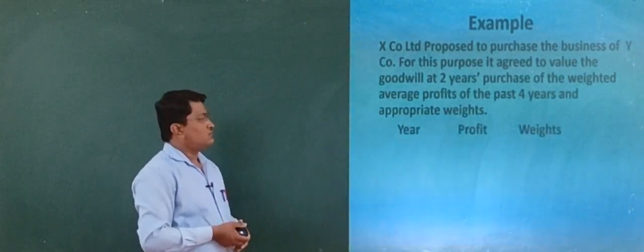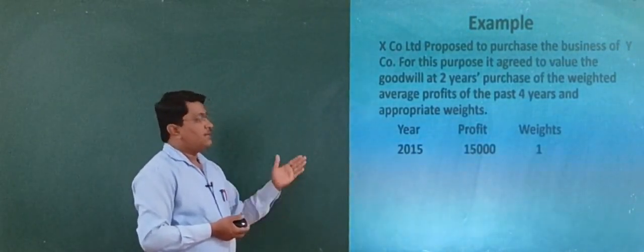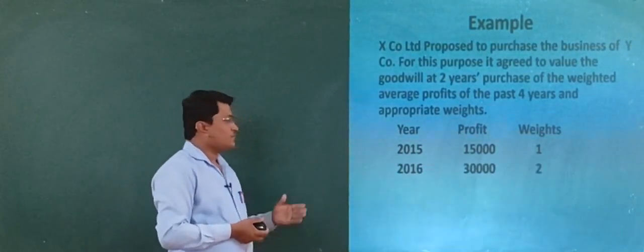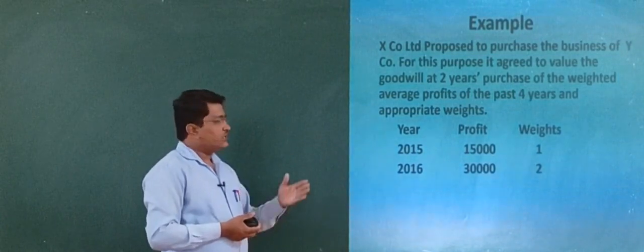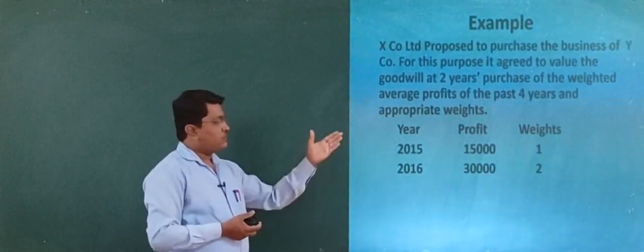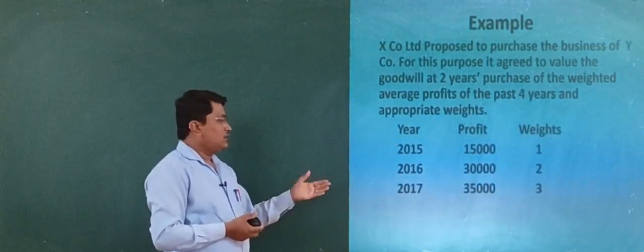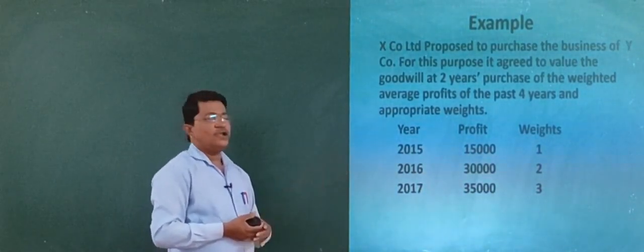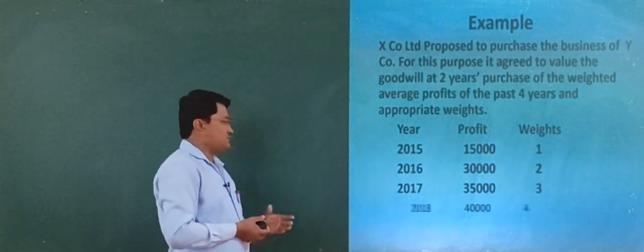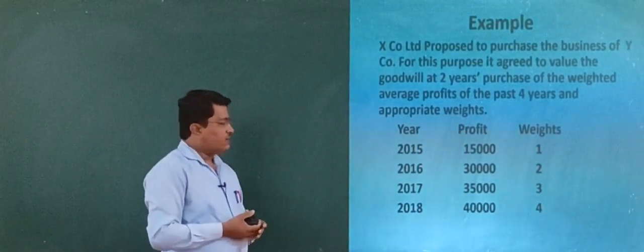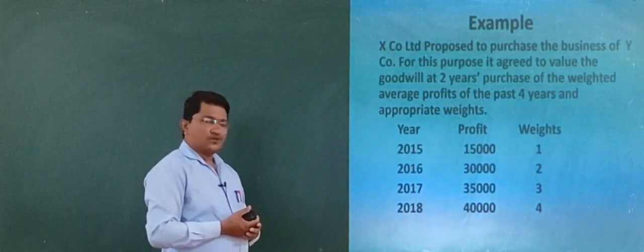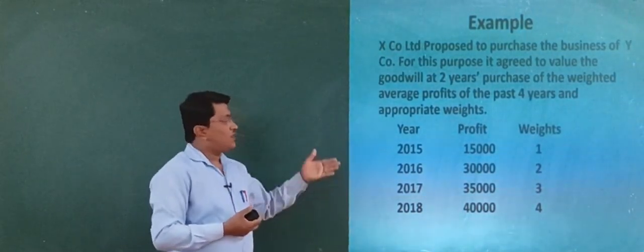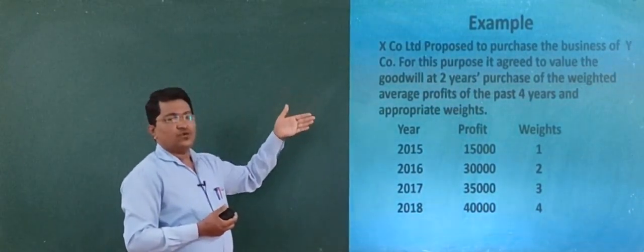The data has 3 columns: Year, Profit, and Weight. Year 2015: profit 15,000, weight 1. Year 2016: profit 30,000, weight 2. Year 2017: profit 35,000, weight 3. Year 2018: profit 40,000, weight 4. Please note this down.